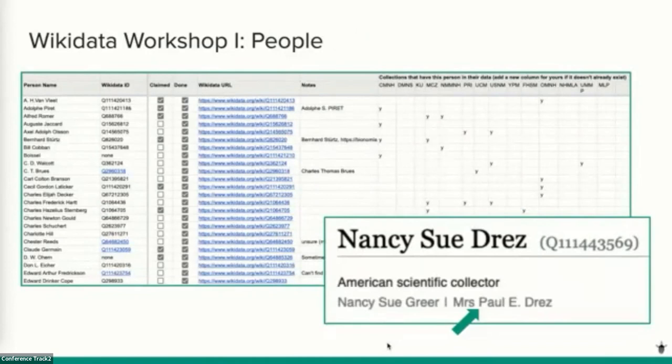We were also inspired to focus on sharing data about people because of successful work being done elsewhere in the biodiversity collections community, such as a 2020 workshop on mobilizing information about collectors to Wikidata and Bionomia. Our first workshop in March 2022 brought together 30 participants virtually for a hands-on introduction to finding, editing, and using data in Wikidata, focusing on people associated with paleontology collections. Using a shared Google Sheet, participants listed people associated with their collections believed to be associated with other collections as well.